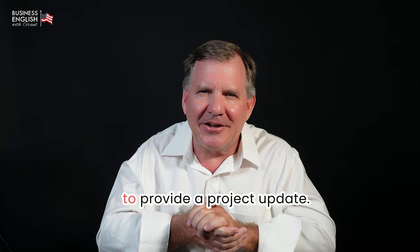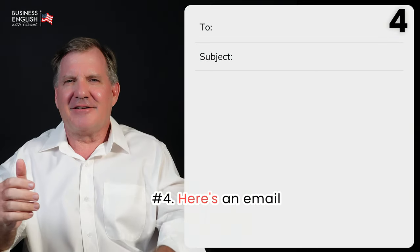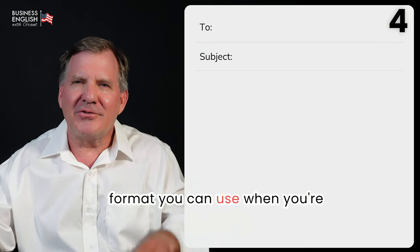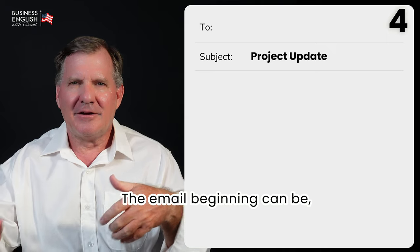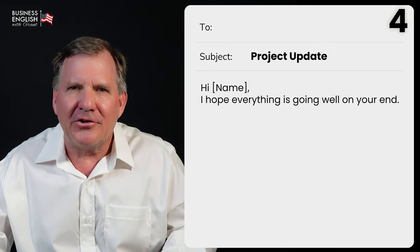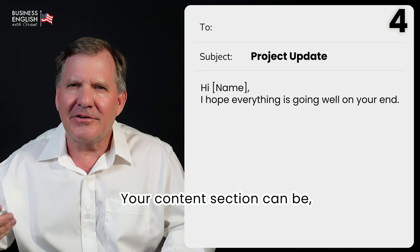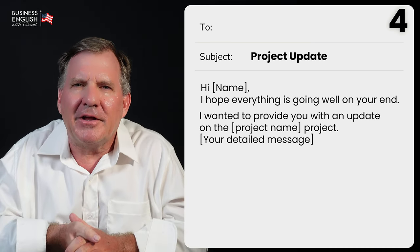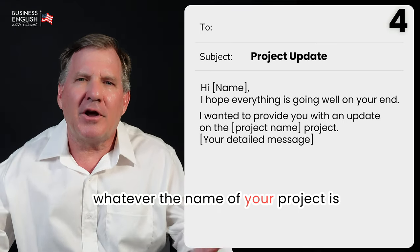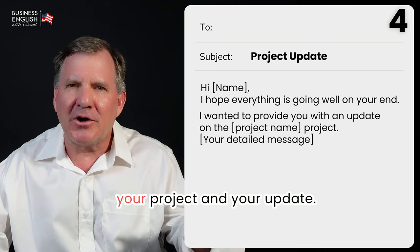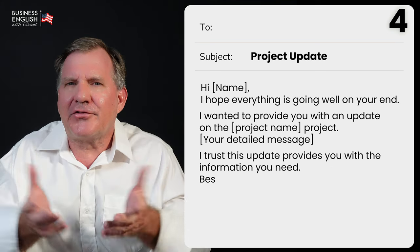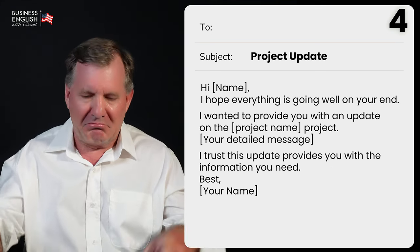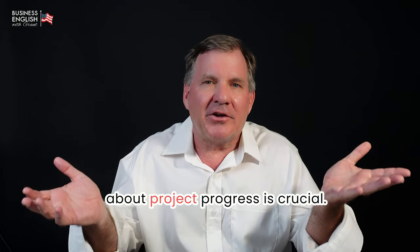Now let's look at how to provide a project update. Number four, here's an email format you can use when giving an update on a project. Beginning: 'Hi Susan, I hope everything is going well on your end.' Content: 'I want to provide you with an update on [project name].' Finish: 'I trust this update provides you with the information you need. Best, Grant.' Keeping stakeholders informed about project progress is crucial.